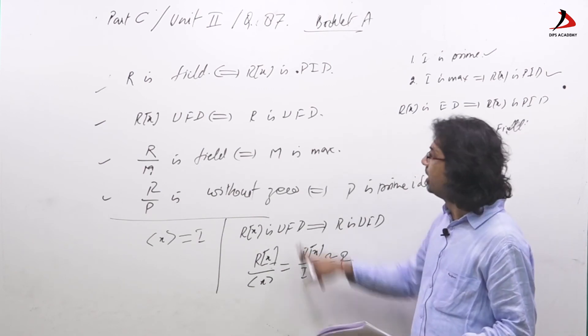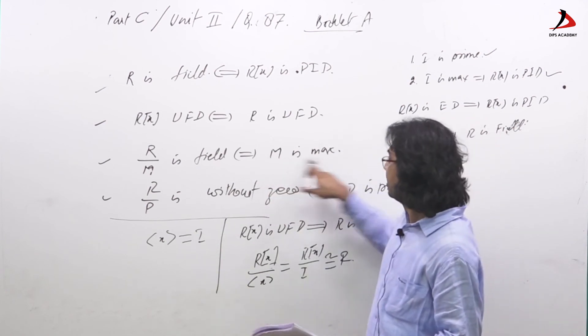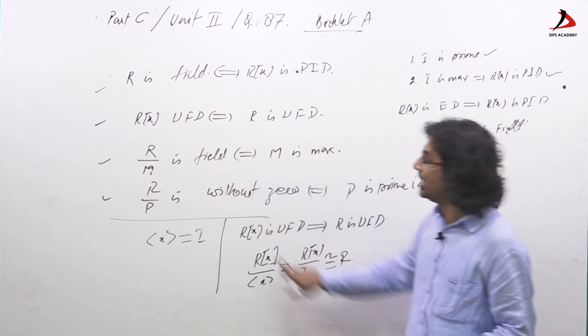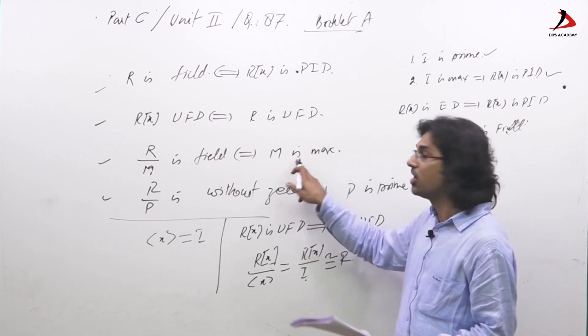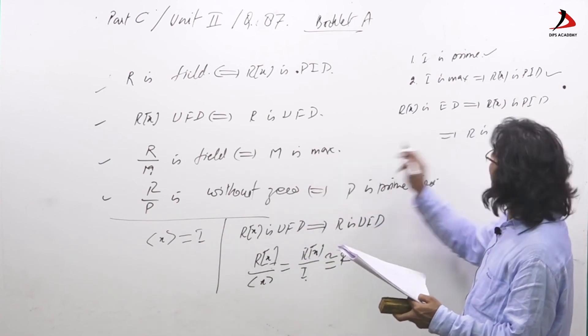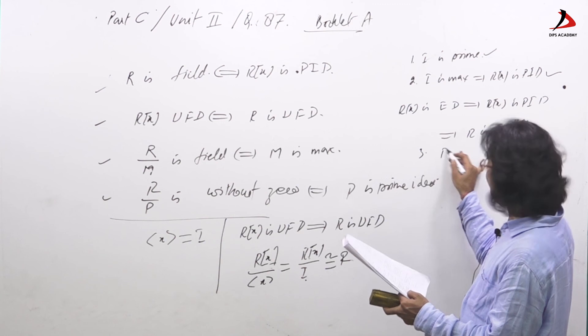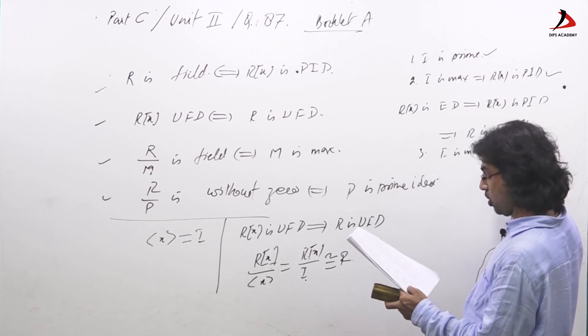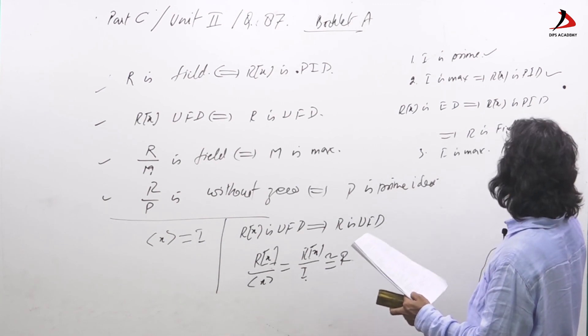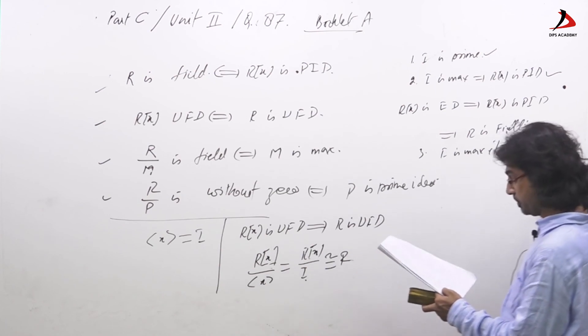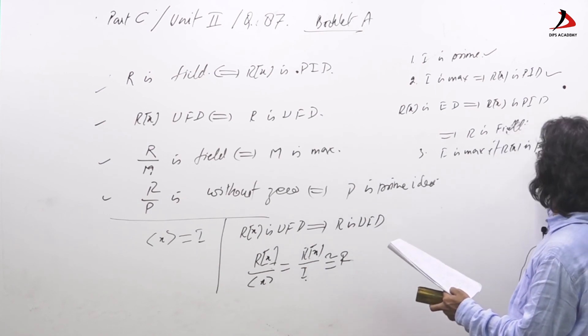Then Rx over I is maximal. Use this result, Rx over I is field, hence I is maximal. So third is also correct. That I is maximal when Rx is ED, Euclidean domain.